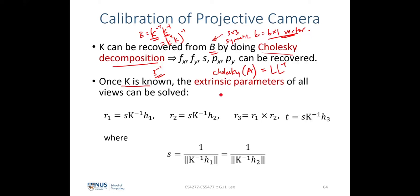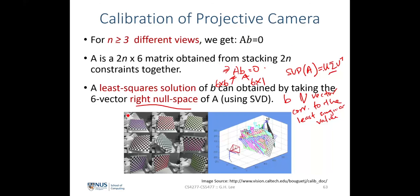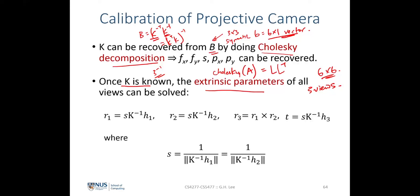Once K is known, what remains are the extrinsic parameters for each view. If we take 3 views, we will have 3 different R and T pairs — each view has a different R and T with respect to the camera. We also need to solve for the scale factor S. R1 is obtained as S·K^{-1}·H1, where H1 is the first column of the homography for that view.